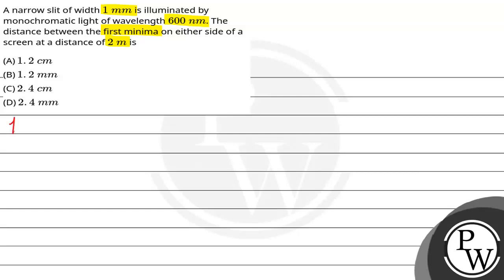Key concept: Distance of first minima. Now, we have a narrow slit. This is our narrow slit, and here is our screen. The narrow slit width is called d. The distance between them is capital D.